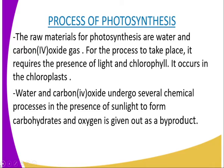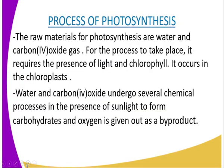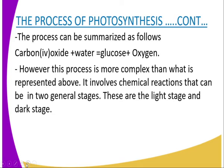Water and carbon dioxide undergo several chemical processes in the presence of sunlight to form carbohydrates, and oxygen is given out as a byproduct. The process can be summarized as follows: carbon dioxide taken from the atmosphere combines with water absorbed from the soil to form glucose and oxygen. This oxygen is given out as a byproduct, taken in by animals, and the glucose is used by the plant for growth.